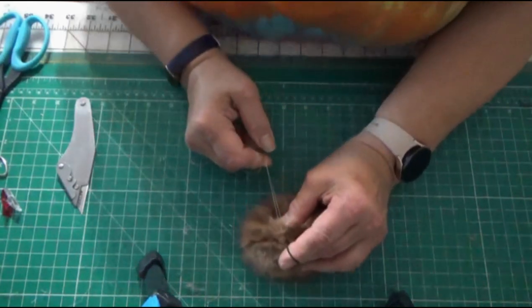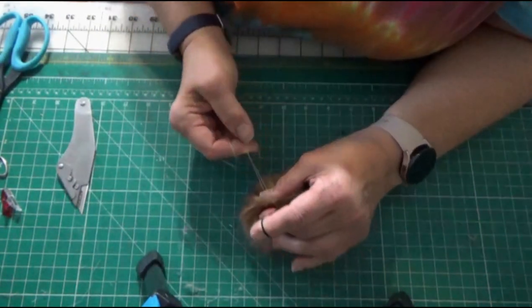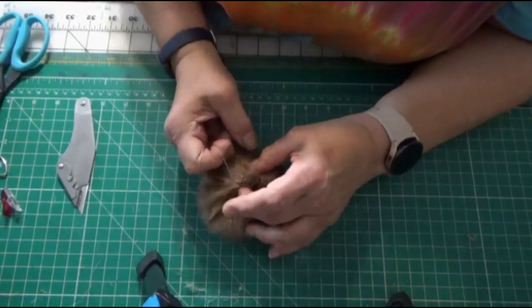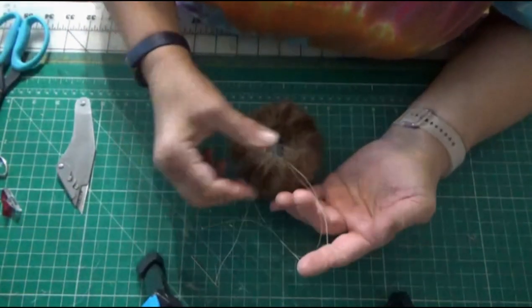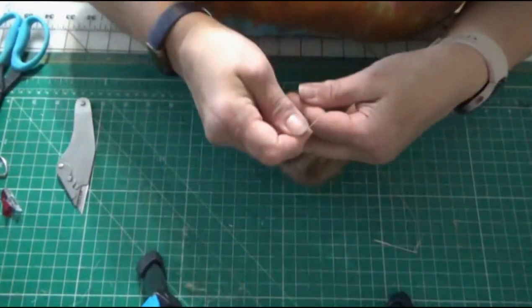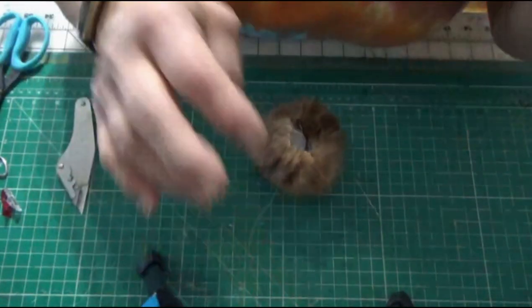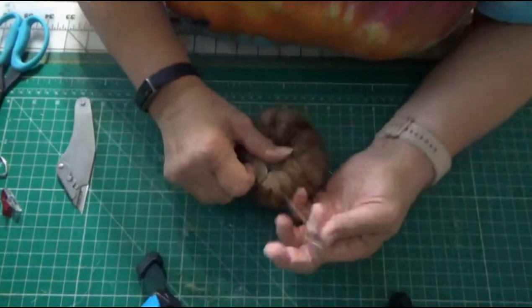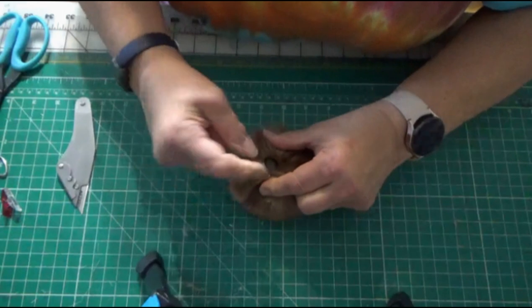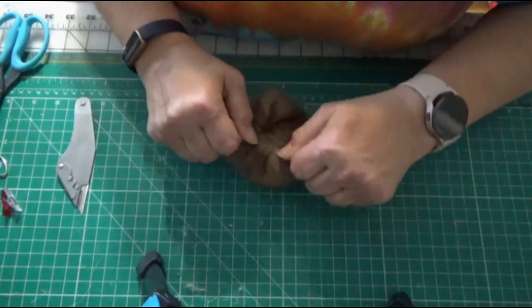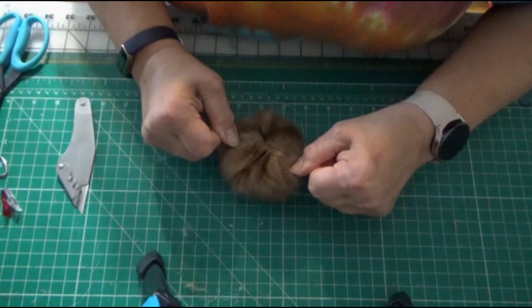And now here is the tricky part. Because the nature of the beast is it is going to want to expand again, I am going to tie it. And you see as I take off the pressure, it starts to open up again. So I make my first knot and pull it tight, or as tight as I can get it without tearing it.